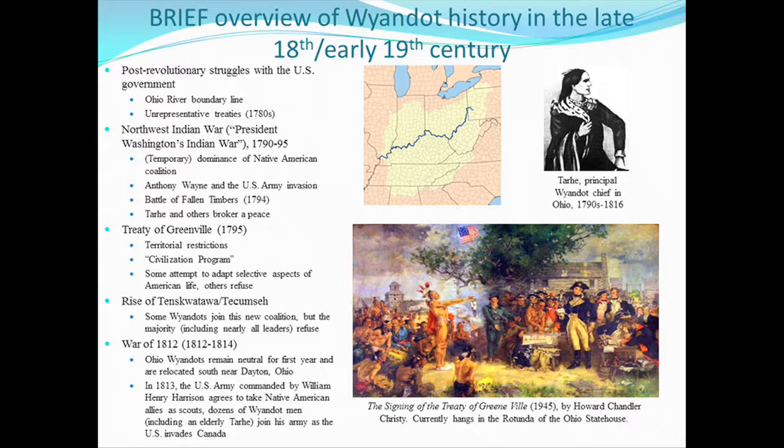The civilization program was designed mostly by two men: President Washington and the Secretary of War, Henry Knox — Fort Knox, Kentucky is named after him. It's notable that Native affairs are under the War Department, not the State Department, which tells us something about the thinking about the future. This civilization program had a single goal: to assimilate Native people — to absolutely change Native people into white people. As a Cherokee man in a video I show in my classes puts it, 'they wanted to make us brown white people.' The end goal was supposed to be absolute assimilation.